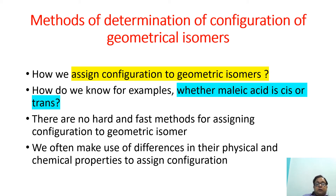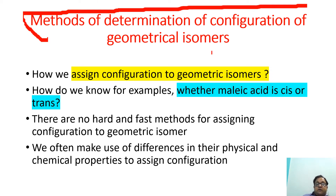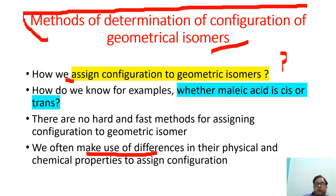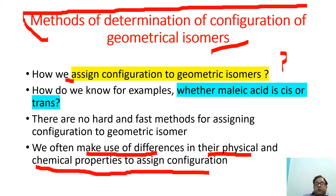Now today we are focusing on the methods of determination of configuration of geometrical isomers — how we assign configuration to them. For example, how do we know whether maleic acid is cis or trans? As such, there are no hard and fast methods for assigning configuration to geometrical isomers. Generally, we make use of differences in their physical and chemical properties to assign the configuration.